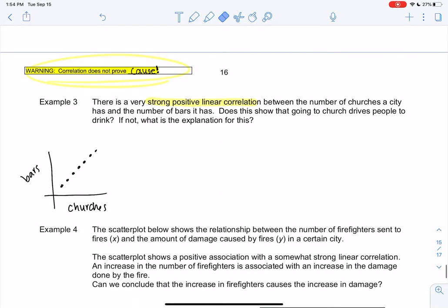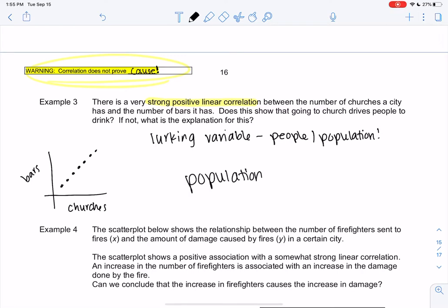I think what's happening here is there's another variable. They're called lurking variables. And what is the lurking variable? So why would a city have more churches and have more bars? Probably just because it has more people, right? Or population. A bigger city just has more of everything. So there's a relationship between a city having churches and bars, but the relationship is really caused by population. Population is a lurking variable causing both.